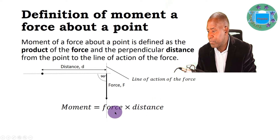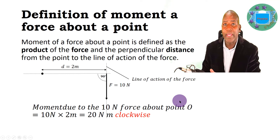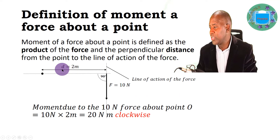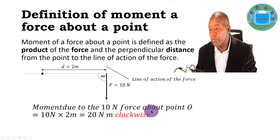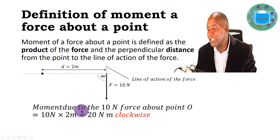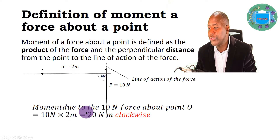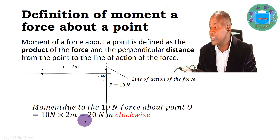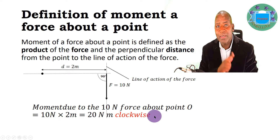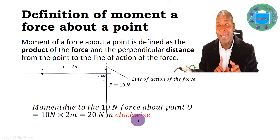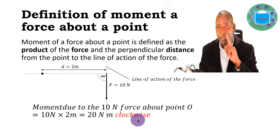Let's put some numbers in. Let the distance be 2 meters and the force be 10 newtons. The moment due to the 10-newton force about point O is force times perpendicular distance, which gives 20 newton meters clockwise. When systems turn, they either turn clockwise or anti-clockwise. To determine the direction, imagine the point is the center of a clock and the distance is one of the arms — then ask which direction the arm turns due to the applied force.